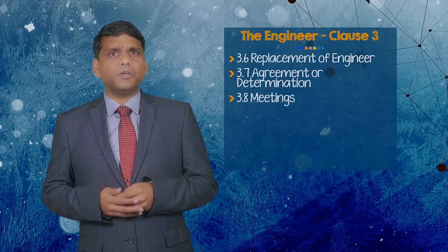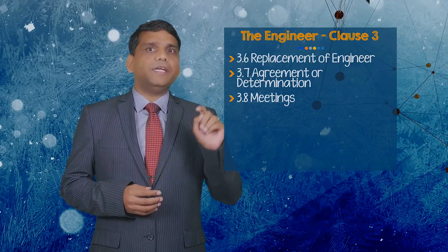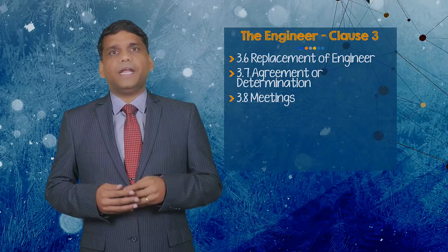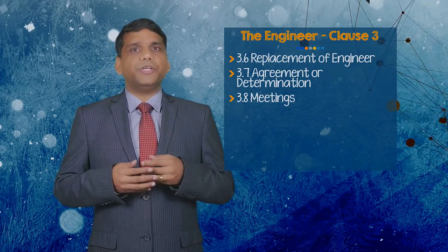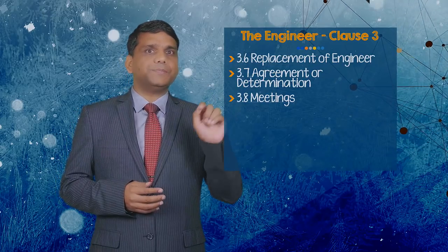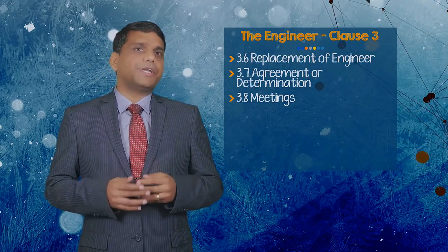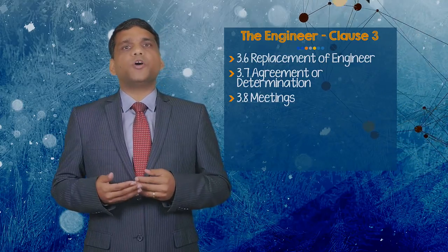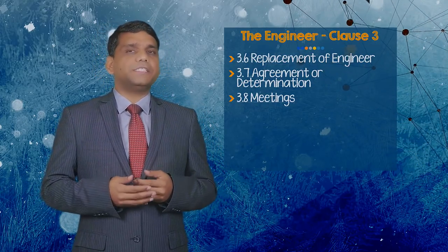The role of the engineer is now more prescriptive and procedural in nature, and the engineer is expected to act neutrally when exercising authority under sub-clause 3.7. Sub-clause 3.7 is lengthy, spread over 3 pages, and needs time for understanding. As per new sub-clause 3.8, Meetings, the engineer is obliged to keep records of meetings and supply copies of minutes of meetings to the participants.